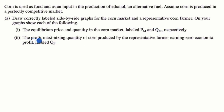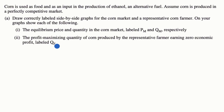The profit maximizing quantity of corn produced by the representative farmer earning zero economic profit, labeled Q sub F. Pause this video and see if you can do this on your own before we work through it together. All right, now let's work through it together. We're going to do correctly labeled side-by-side graphs.